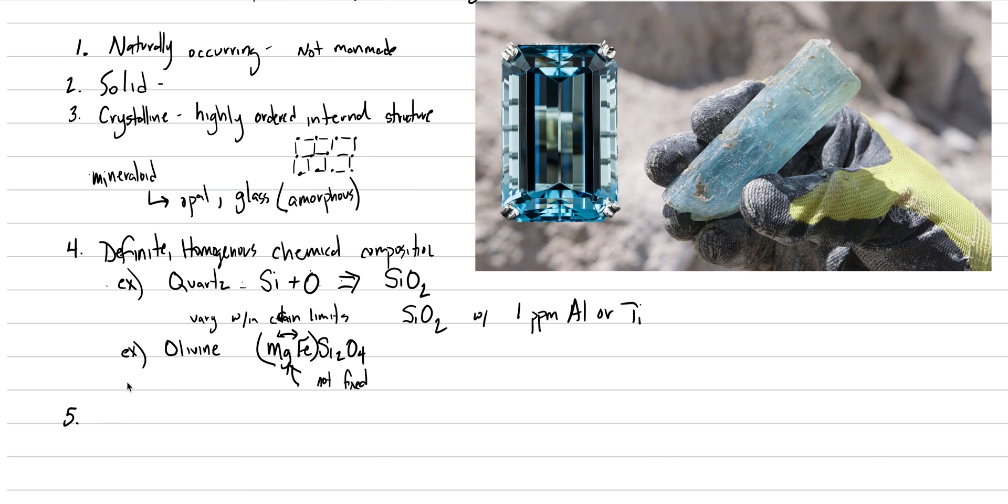Now the last criterion, this is the end of today's, probably the shortest lecture of the semester, it is this idea that minerals are inorganic. This used to be a major rule, and it is now the least important rule, and I don't even think we should include it. Well, we're going to include it in the definition, but we're going to always just put a little asterisk next to it that says, not really important.